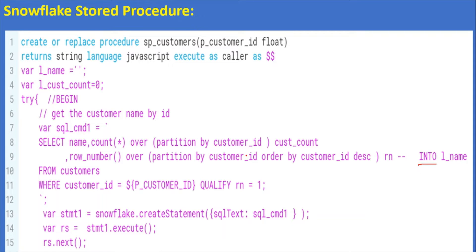There is no INTO clause in Snowflake. What will happen is that even if we have more than one row for any customer, we don't get any error — all the rows will come into our result set. So while retrieving the data from the result set we have to identify whether the particular customer for a given customer ID has more than one record.